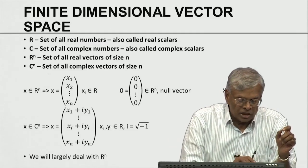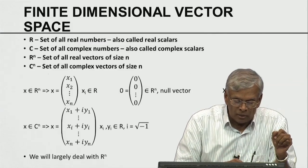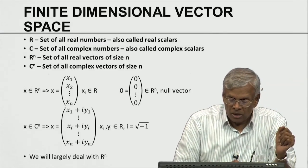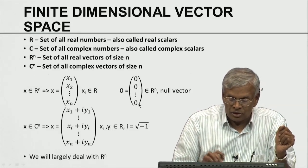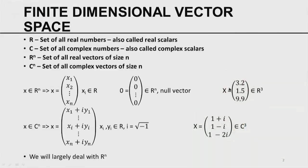X belonging to R^n implies X is a vector with n components, written column-wise, where each component Xi is a real number. The zero vector consists of all zeros and is called the null vector. When n is 3, an example vector is [3.2, 1.5, 9.9], where X1=3.2, X2=1.5, X3=9.9. For a complex vector, each of the n components is a complex number of the form Xi + iYi, where Xi and Yi are real numbers and i is the unit imaginary number (square root of -1). An example complex vector of size 3 is [1+i, 1-i, 1-2i].